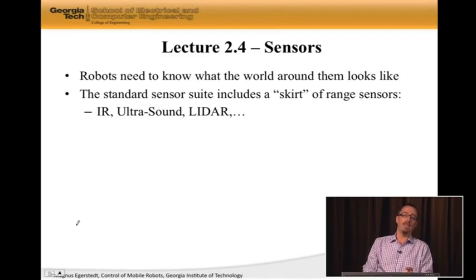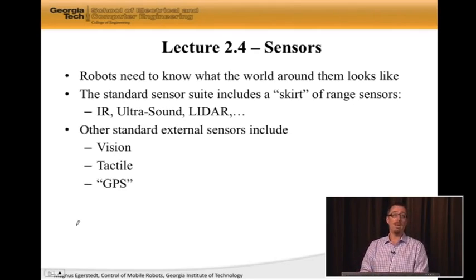It's basically a collection of sensors that are gathered around the robot that measures distances in different directions. So infrared skirts, ultrasound, lidar, which are laser scanners. These are all examples of these range sensors. They're going to show up a lot.